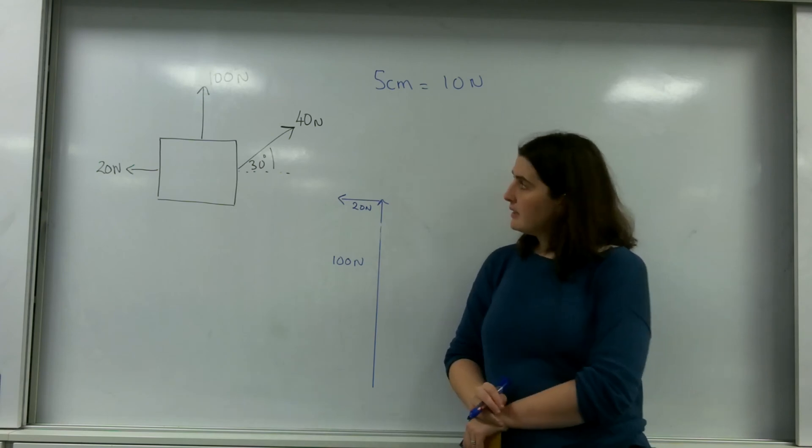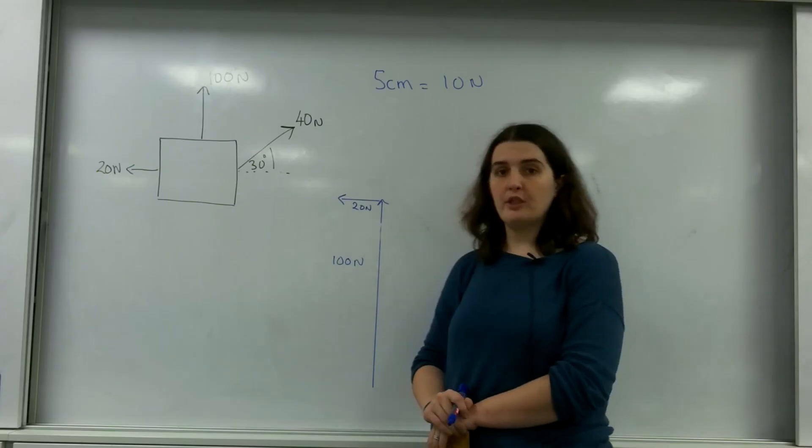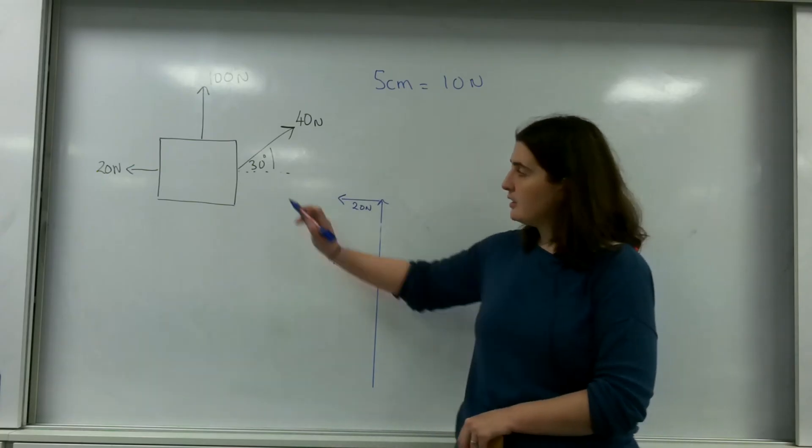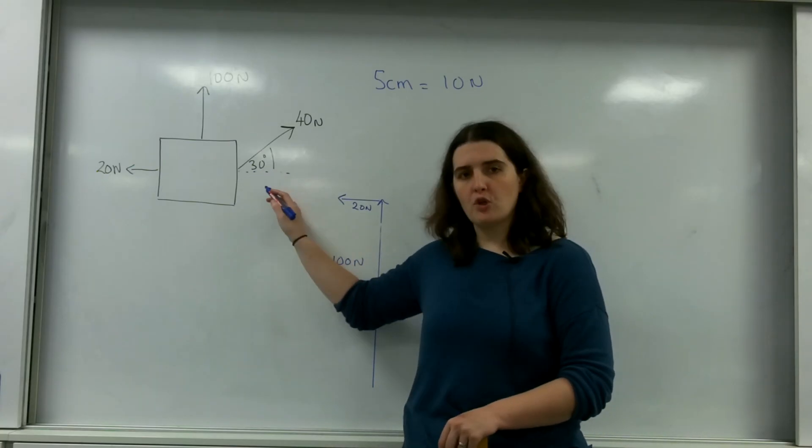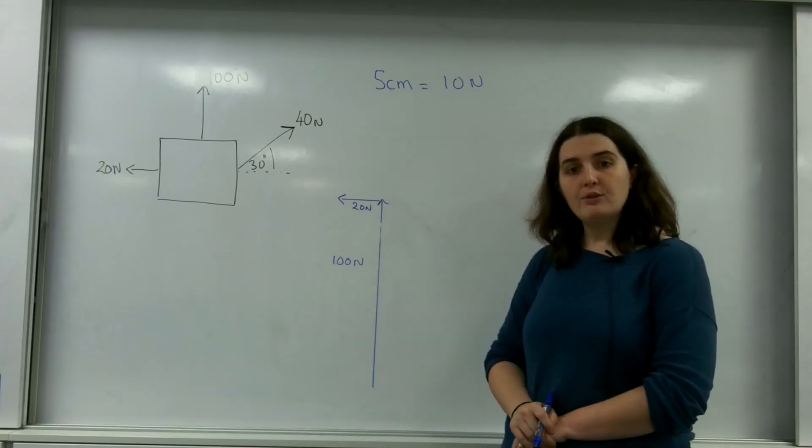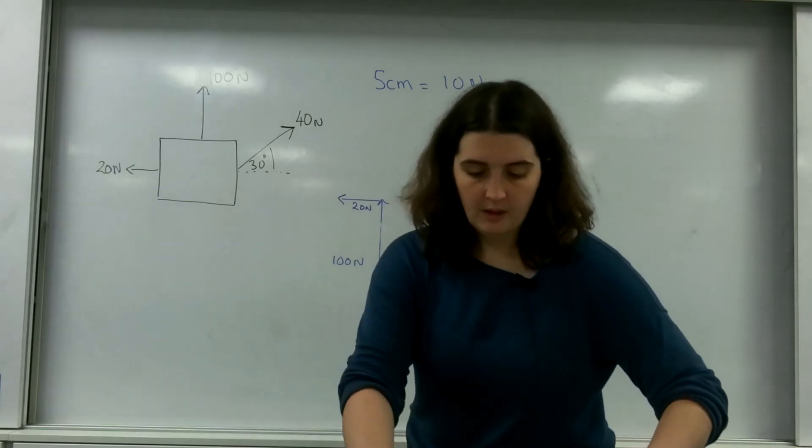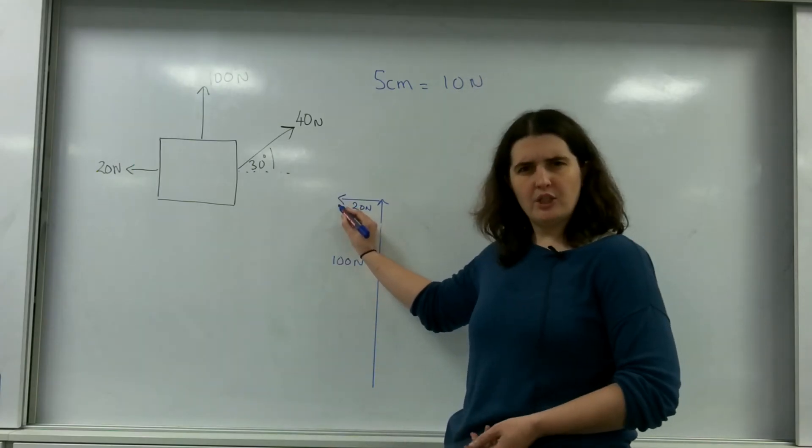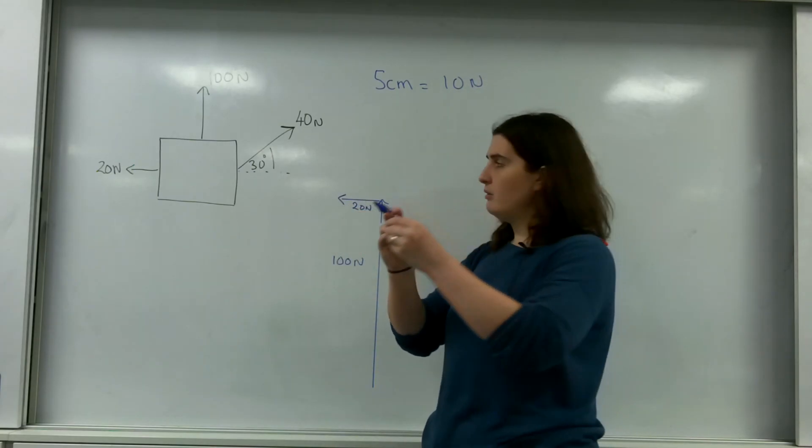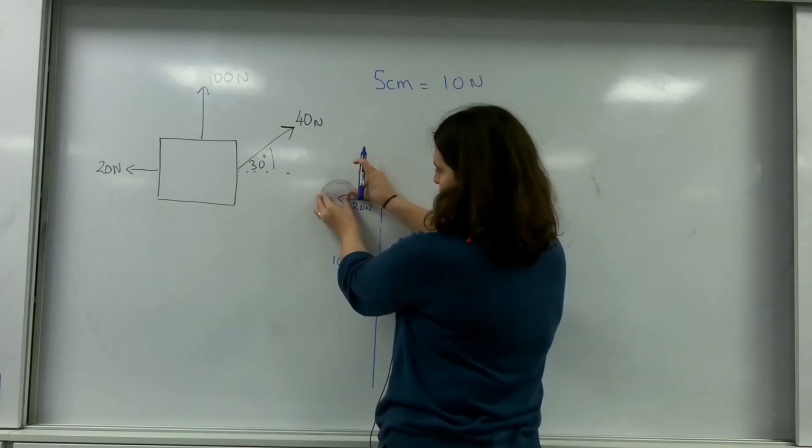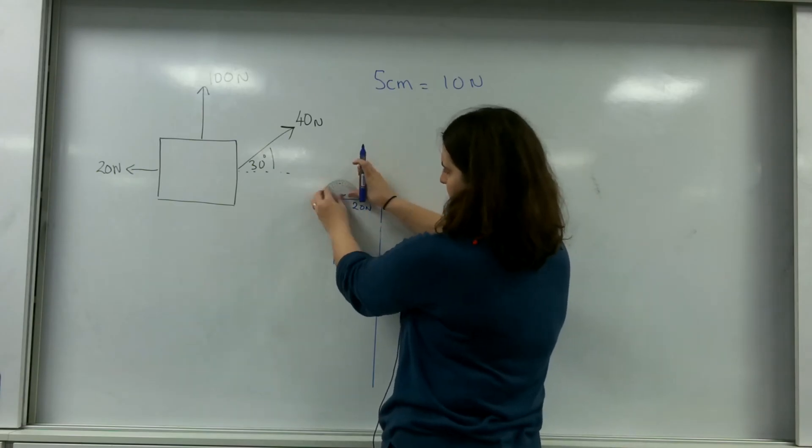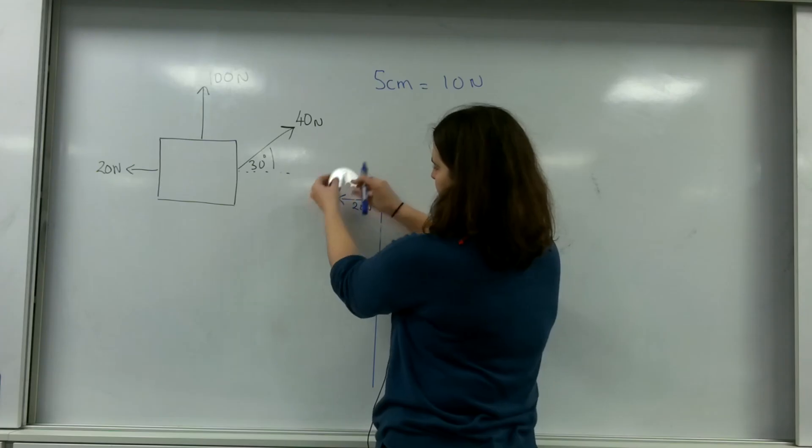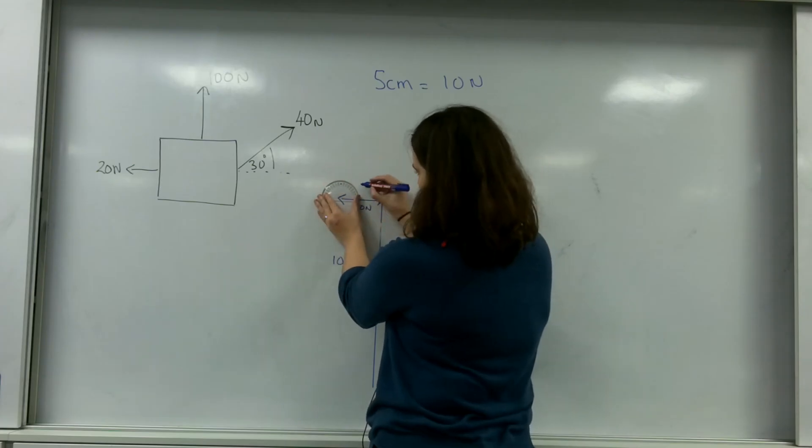Now lastly I have this 40 newtons working at 30 degrees. It's 30 degrees from the horizontal. How you do that is you go to the end of the last vector you've done. With your protractor, you measure 30 degrees here.